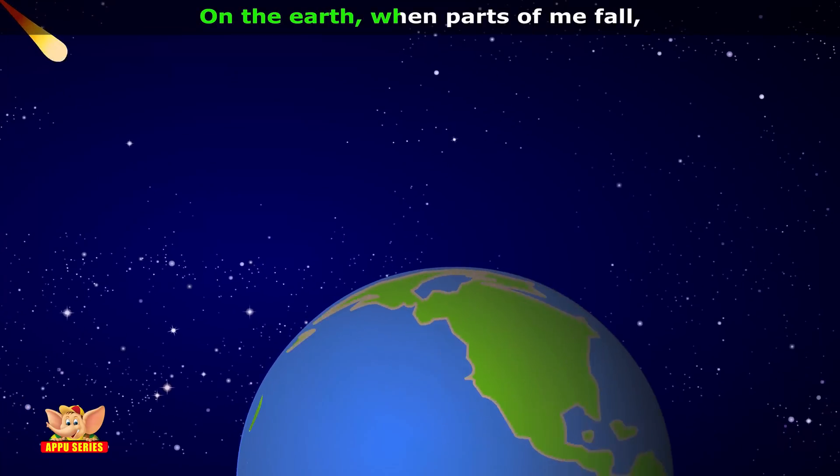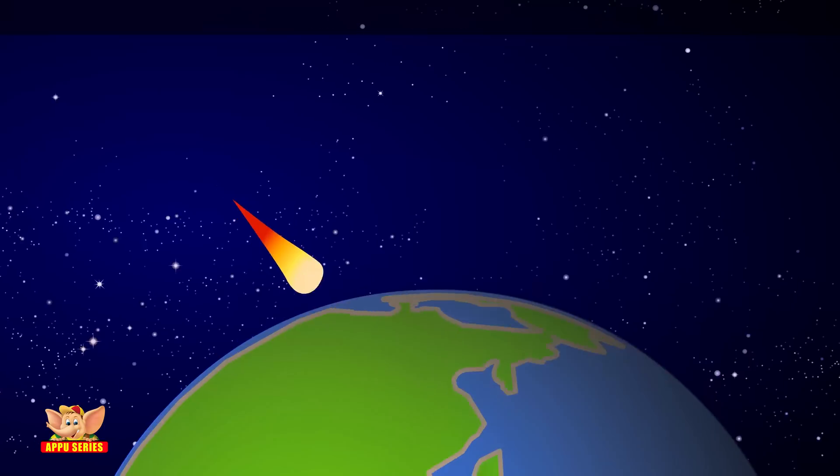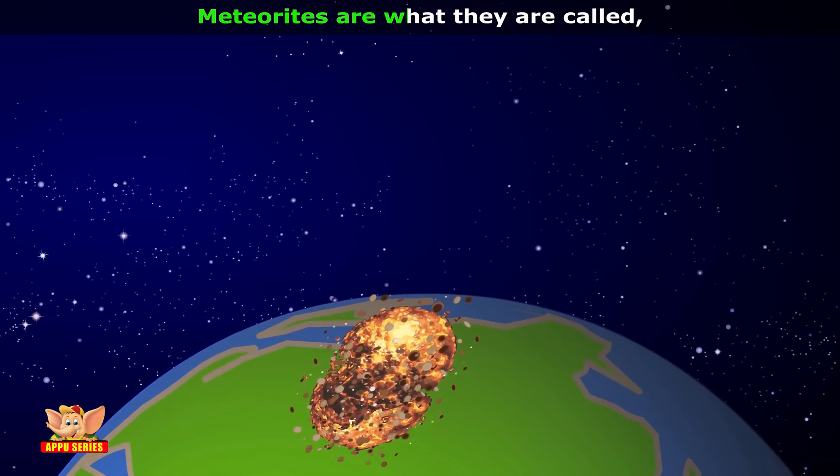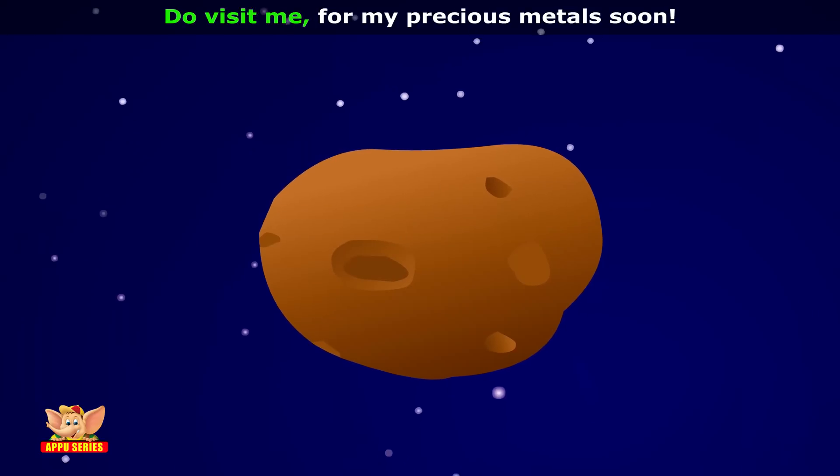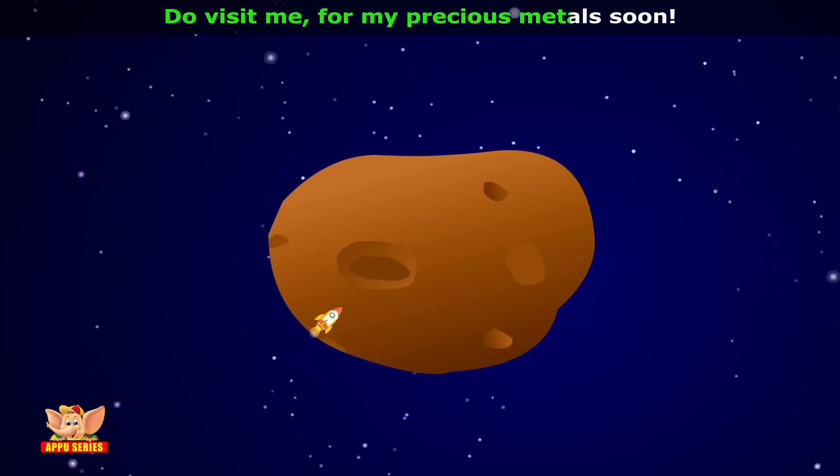On the earth when parts of me fall, meteorites are what they are called. Like planets I too may have a moon. Humans may visit me for my precious metal soon.